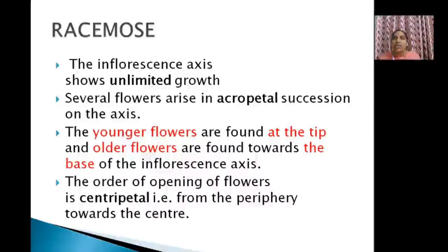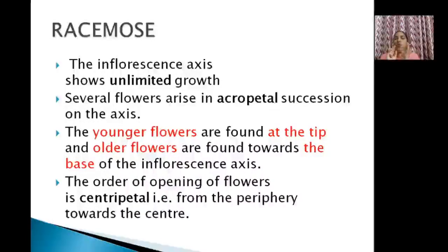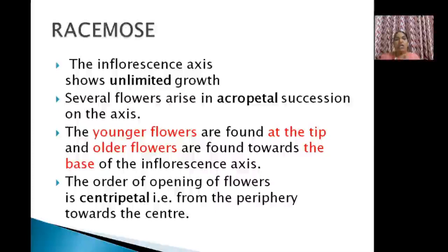The order of opening is also known as centripetal — from periphery towards the center. When flowers occur in a disc-like arrangement, outer flowers open first and central flowers open last. This is centripetal opening. So acropetal succession with younger flowers at the top and older at the base, with centripetal opening — that is racemose inflorescence.